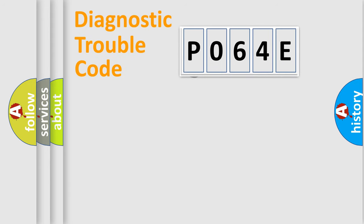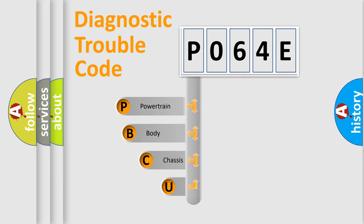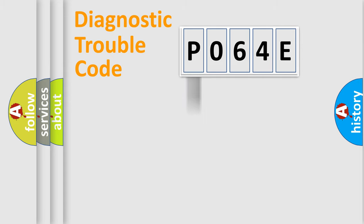Let's look at the history of diagnostic fault code composition according to the OBD2 protocol, which is unified for all automakers since 2000. We divide the electric system of an automobile into four basic units: Powertrain, Body, Chassis, and Network. This distribution is defined in the first character of the code.